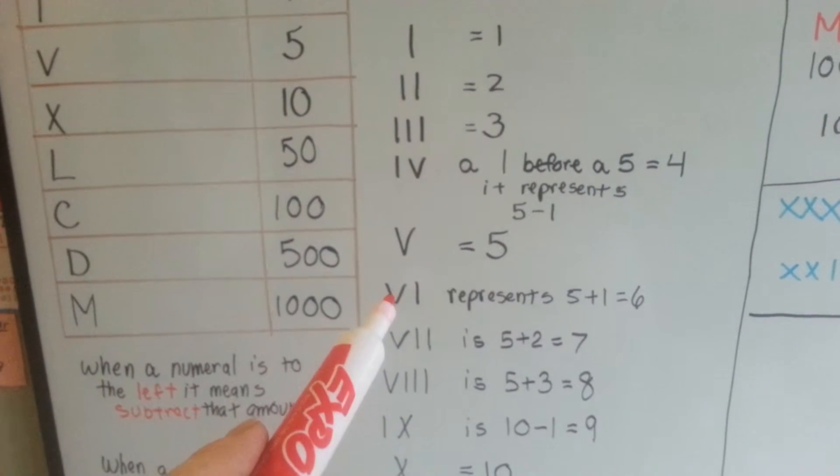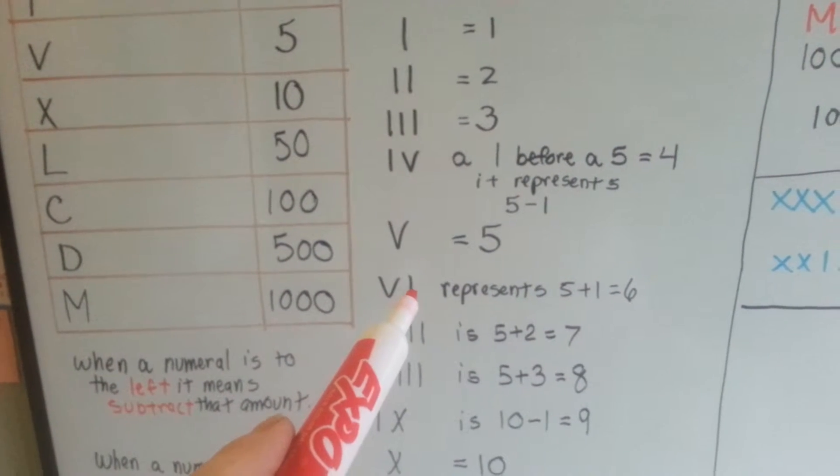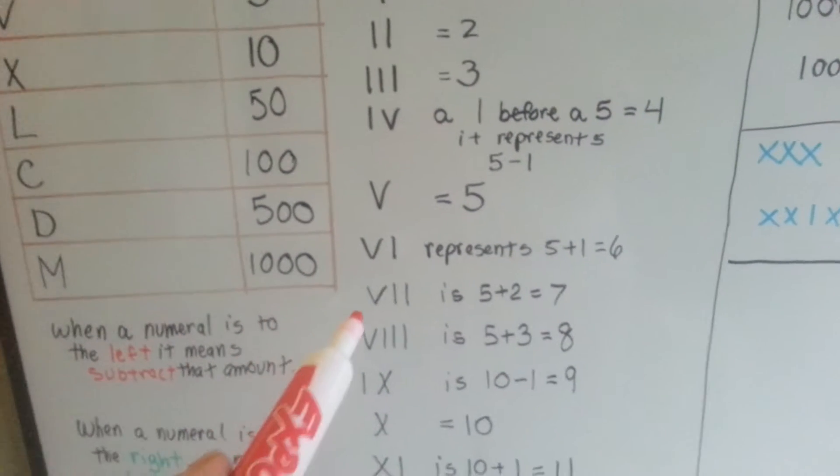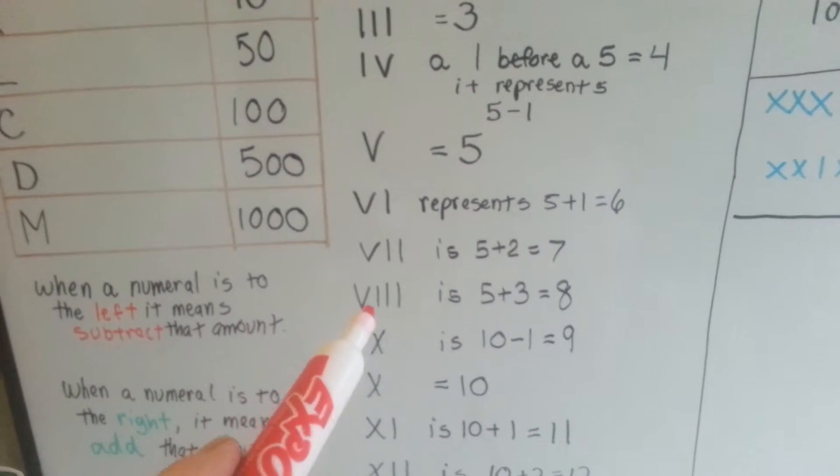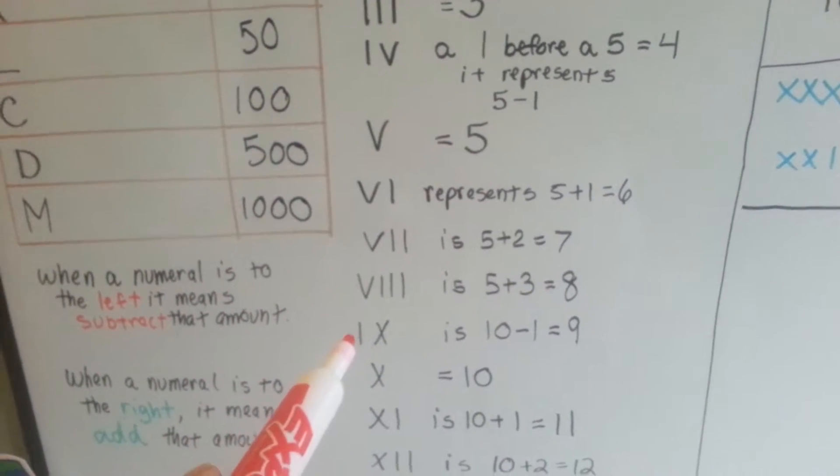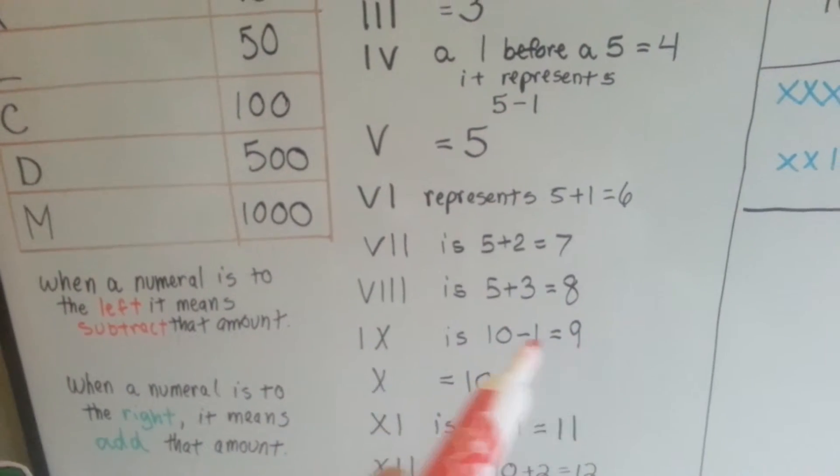Now we know that V is 5. V with an I on the right side means 5 plus 1 is 6. 5 plus 2 is 7. 5 plus 3 is 8. I from 10 is 9.